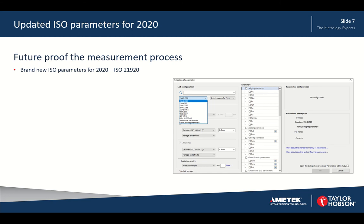The first feature is updated ISO parameters for 2020. This enables users to future-proof their measurement processes. The parameters are coming with ISO 21920, which is likely to come out in March 2021, and having version 8 will enable you to already have those parameters available in the software.